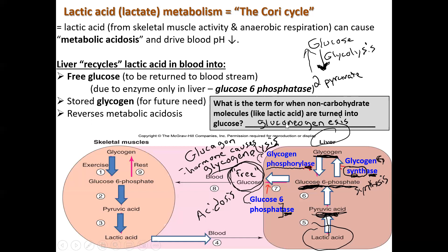I made a mistake in my gray box — when non-carbohydrate molecules are used to make glucose, that's gluconeogenesis. Another memory aid: 'genesis' means to make, 'neo' means novel or new, and 'gluco' is short for glucose. So gluconeogenesis is 'the making of glucose from a novel source' — it's not a carbohydrate. Hopefully that will help you remember it. Moving on to the next slide.